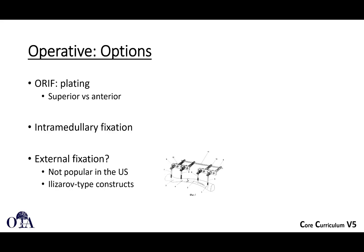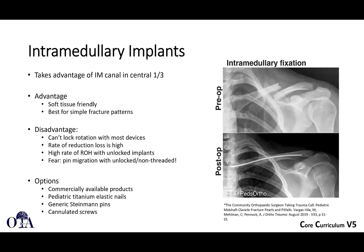For operative options: there is plating — superior versus anterior — and single versus dual plating. There is also intramedullary fixation, and external fixation, though that is not popular in the U.S. Intramedullary fixation is a good option for middle-third fractures that are not comminuted and are length-stable, as the clavicle has an intramedullary canal that can be instrumented. There are commercially available products with some interlocking, as well as specific pins like the Rockwood pin. It can be hard to control rotation, and non-locked implants or plain pins can migrate — so if using intramedullary fixation, use devices specifically designed for it.